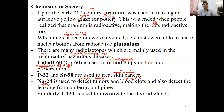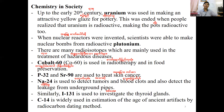Iodine-131 is used to investigate the thyroid. Carbon-14 is widely used in the estimation of the age of ancient organic materials.